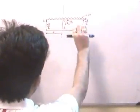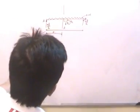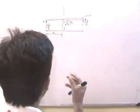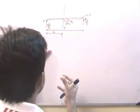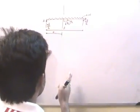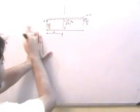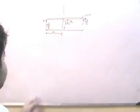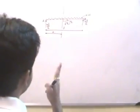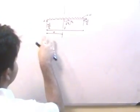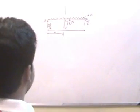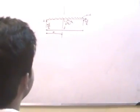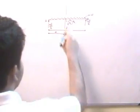Between A and B there is a uniform loading pattern, so we can take any cross section and find the bending moment and shear force equation at that cross section. This equation can then be used for any point within AB. Let us cut a cross section at C, which is at a distance X from A, with shear force VX and bending moment MX.